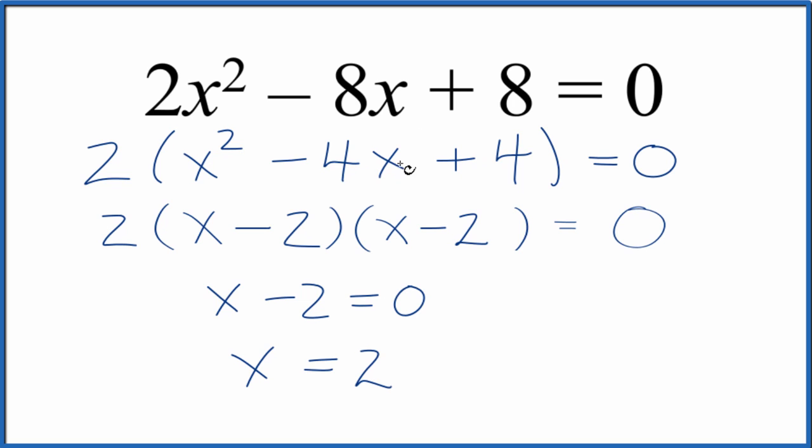So if I put 2 in for x here and here, do all the math, multiply by 2, I'll get 0. If I put 2 in for x up here, do the math, all of this will equal 0. So this is the correct root here as we factored 2x squared minus 8x plus 8. And if you use the quadratic equation, you get the same answer.